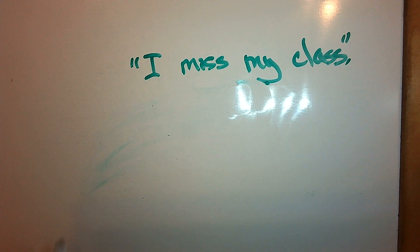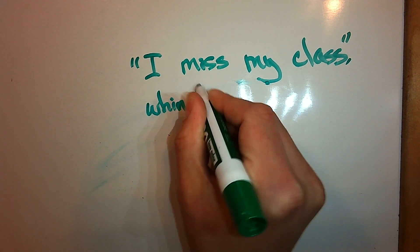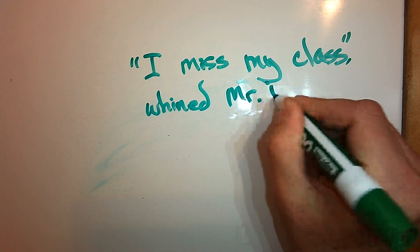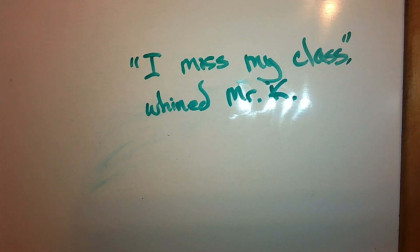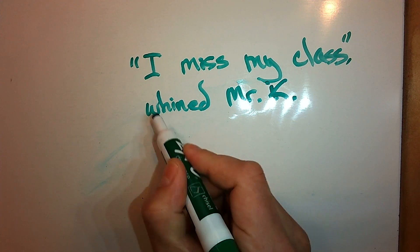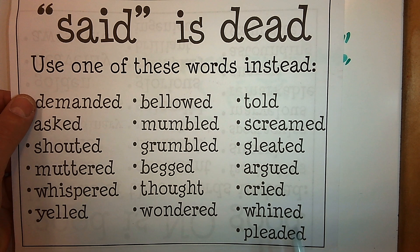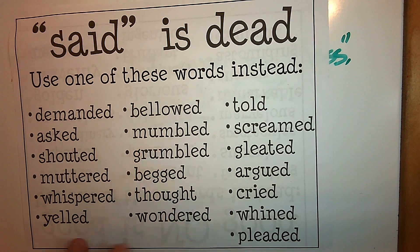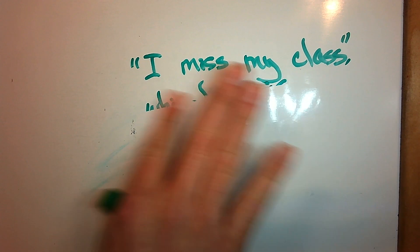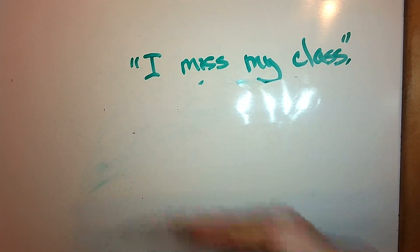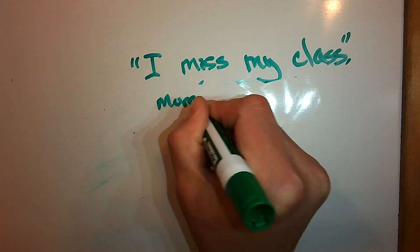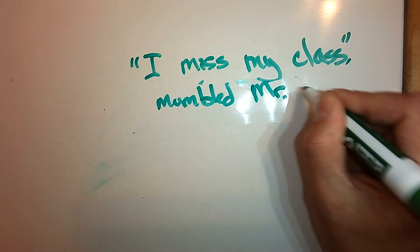Or maybe he's whining it, like a little baby. 'I miss my class,' whined Mr. K. Notice how this changes things. Now he's whining. I used a different word instead of said. You can always check this list and see if there's a better word. Maybe he mumbled it — that means he said it really softly. 'I miss my class,' mumbled Mr. K.